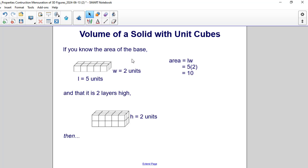If you know the area of the base, and we do know the area of the base. For this particular prism, the length is five units. One, two, three, four, five. And the width is two units, one and two. We go ahead. We can calculate the area. Five times two is ten. So we got that.